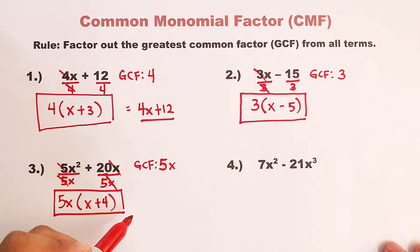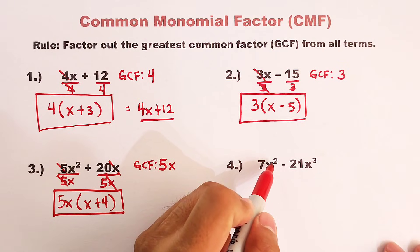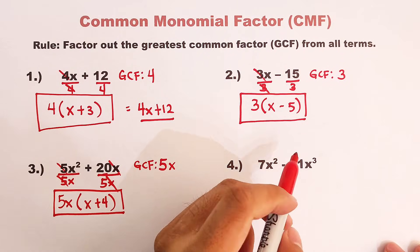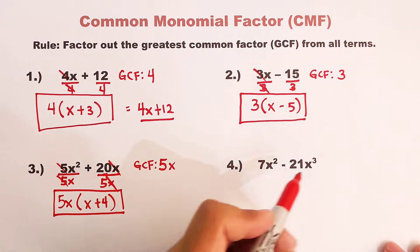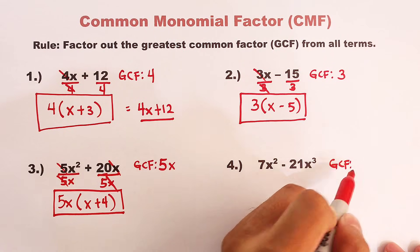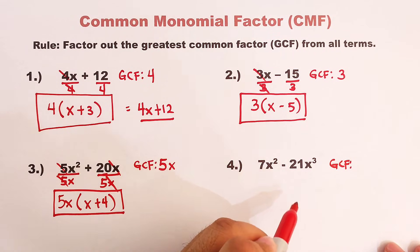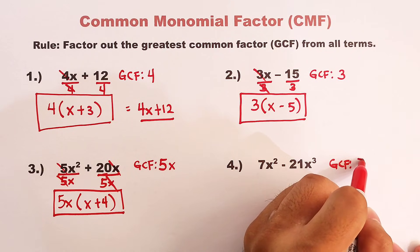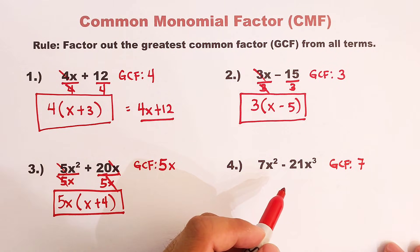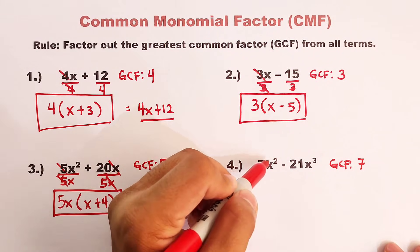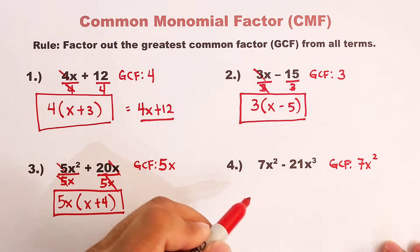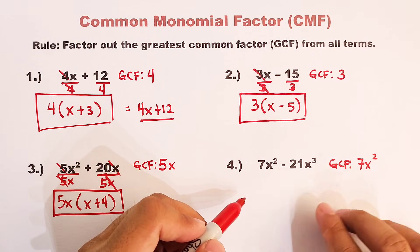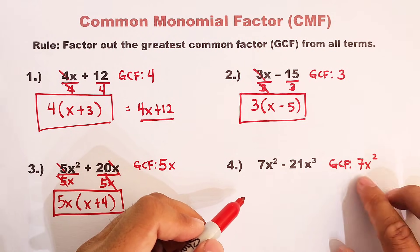Let us proceed with example number 4. We have 7x squared minus 21x cubed. Now, what do you think is the GCF between 7 and negative 21? Okay, very good. The answer is simply 7. What about for the variable x? As I have mentioned earlier, get the variable with the least exponent. And that is x squared. Now, the greatest common factor of these terms is 7x squared.